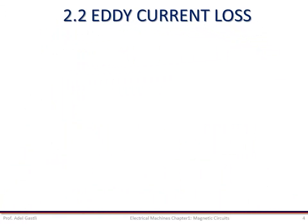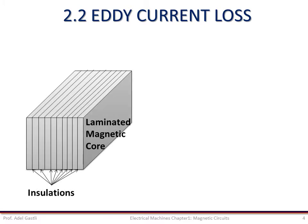The eddy current loss can be reduced in two ways. A high resistivity core material may be used, or addition of a few percent of silicon — say 4% — to iron will increase the resistivity significantly. Another way to reduce the eddy current loss is to use a laminated core. The lamination is made in the plane of the flux so that the current path is cut by the insulation layers, which makes it difficult for the eddy current to build and circulate.